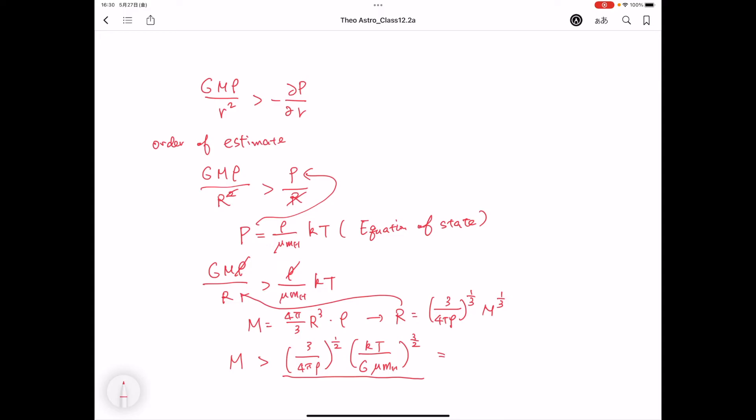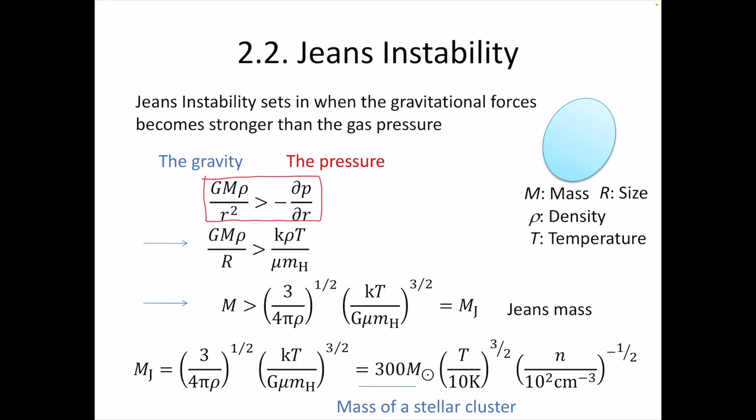We call this minimum mass the Jeans mass, M_J. If we substitute a temperature of about 10 K and a number density of 100 particles per cubic centimeter, we can calculate the Jeans mass. It is about 300 solar masses. This number agrees with the mass of stellar clusters, so we can explain the formation of stellar clusters using this simple estimate of the Jeans mass.